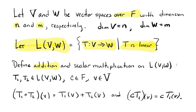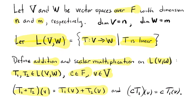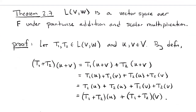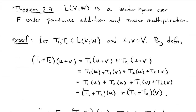These are functions, so we can add them and scale them pointwise. We define addition and scalar multiplication on L(V,W) as follows: if you take two linear transformations T1 and T2 and a scalar, then for every element in the domain, T1 plus T2 of V is by definition the sum of the values — that's pointwise addition. And C times T1's value at V is by definition C times T1 of V — pointwise scalar multiplication. Theorem 2.7 says those two operations make L(V,W) into a vector space over the same field.